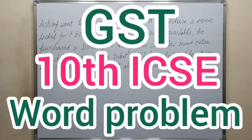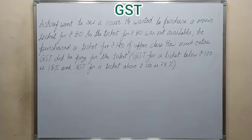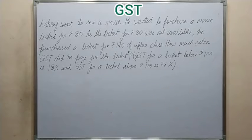Hello friends, GST is our problem. Ashraf went to see a movie. He wanted to purchase a movie ticket for Rs. 80, but the ticket for Rs. 80 was not available. He purchased a ticket for Rs. 120 of upper class. How much extra GST did he pay? GST for a ticket below Rs. 100 is 18%, and GST for a ticket above Rs. 100 is 28%.